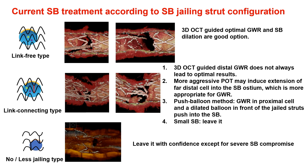This is the current concept of side branch treatment according to the side branch j-ring strut configuration. We add a new concept — no or less j-ring type — in addition to the two previously reported types. When we encounter the link-free type, 3D OCT guidance is strongly recommended for optimal side branch treatment. When we encounter link-connecting type, 3D OCT guided distal guidewire wiring does not always lead to optimal results. More aggressive dilation may extend the furthest cell into the side branch ostium, which is more appropriate for guidewire recrossing. Push balloon method is another option. When the side branch is small, or no/less j-ring type, we can leave it with confidence except for severe side branch compromise.